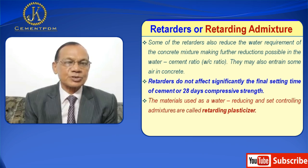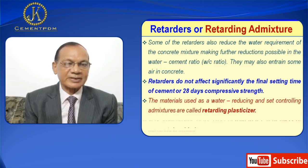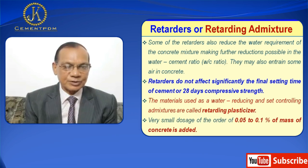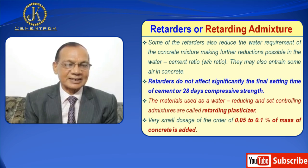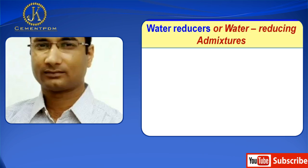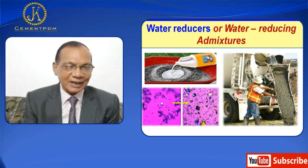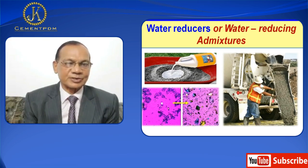Materials used as water reducing and set controlling admixtures are called retarding plasticizers. Very small doses of the order of 0.05 to 0.1% by mass of concrete are added. I will now discuss water reducers.